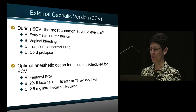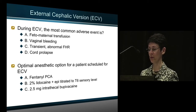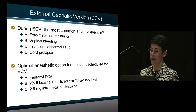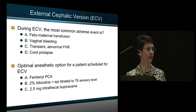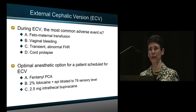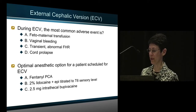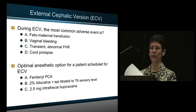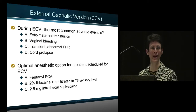Question number one: during external cephalic version, the most common adverse event is fetal maternal transfusion. Is it vaginal bleeding? Is it a transient abnormal fetal heart rate, or cord prolapse? Question number two: the optimal anesthetic option for a patient scheduled for external cephalic version — is it a fentanyl PCA, an anesthetic level with 2% lido with epinephrine, or an analgesic level with two and a half milligrams of intrathecal bupivacaine? Take a quick answer, and we'll see if the answers are the same at the end of my talk.